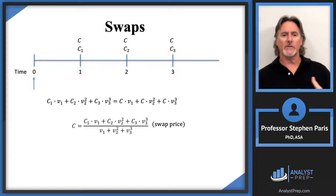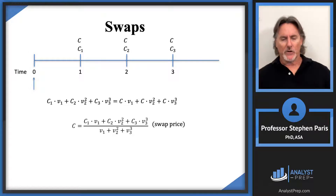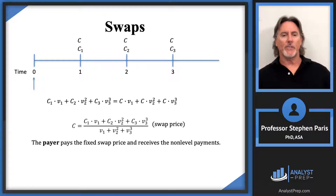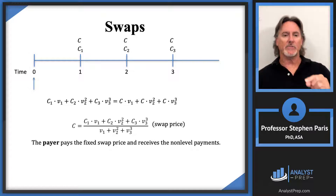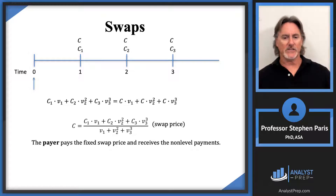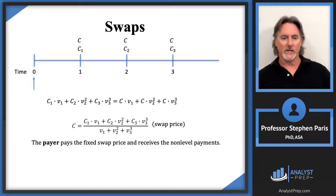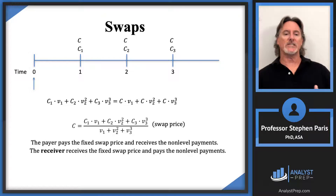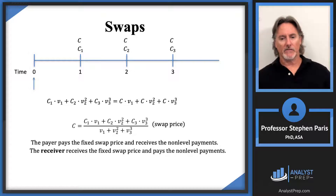There are two people involved in the transaction, and we have words to describe them. The payer of a swap is the person who pays the fixed swap price — they will be paying the cap C value and receiving the C₁, C₂, and C₃ values. The other person on the opposite end of the transaction from the payer is the receiver. The payer is paying the fixed swap price, so the receiver is receiving the fixed swap price and in turn is paying the non-level payments.